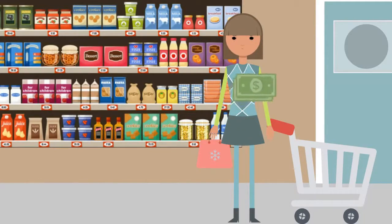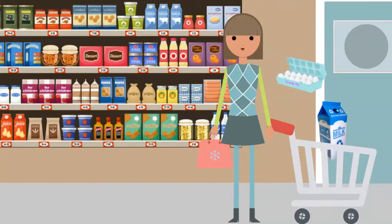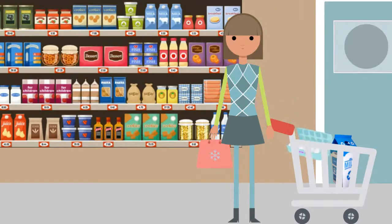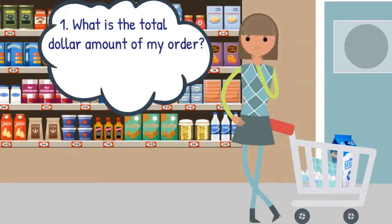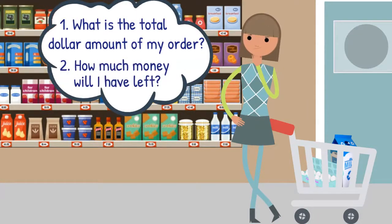I have $20 to spend. I need to buy milk, which is $3, and eggs, which are $5. First, what is the total dollar amount of my order? Next, how much money will I have left over after buying these things?